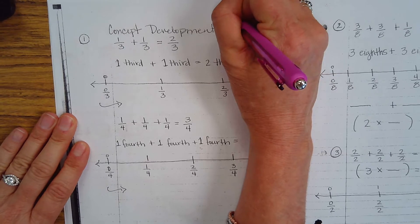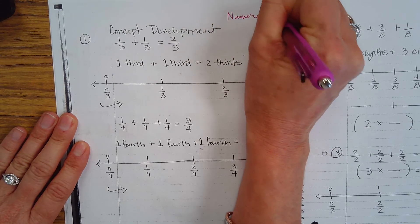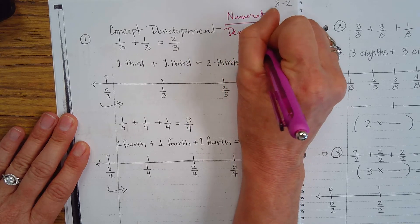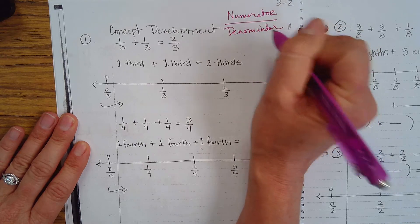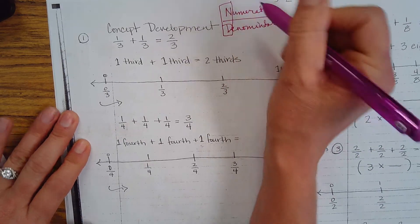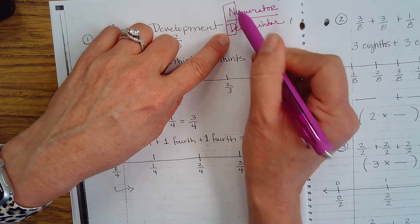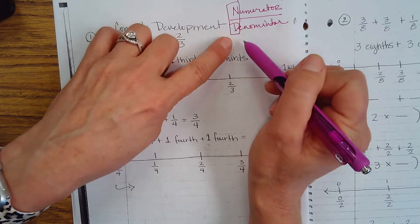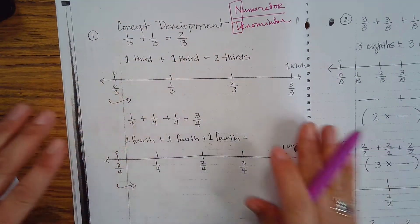A numerator is always the top number. The denominator is always the bottom number. The way I remember it is North Dakota — that's how I remember what word is on top. North Dakota. It's the little things.